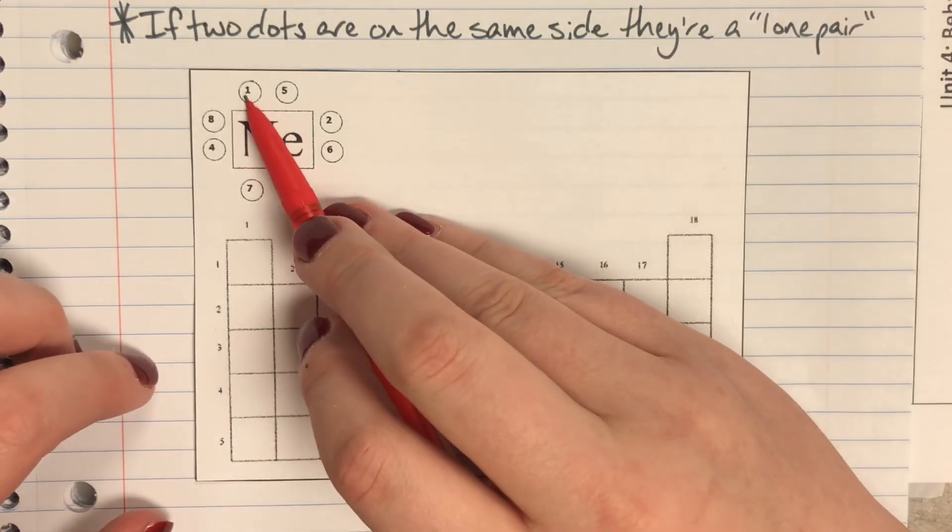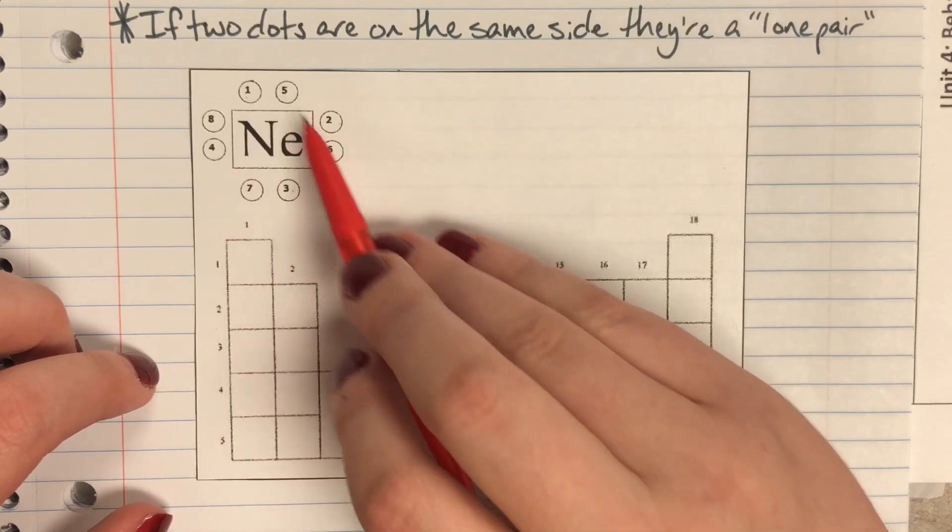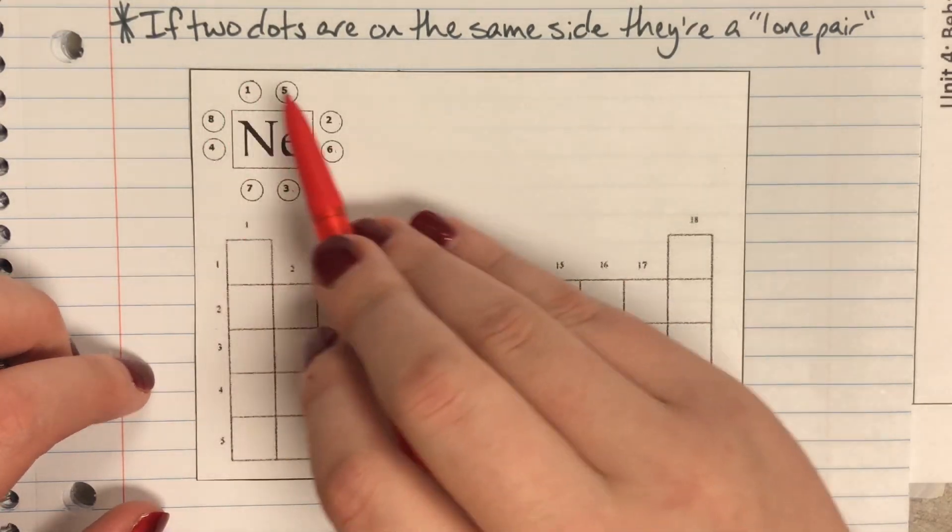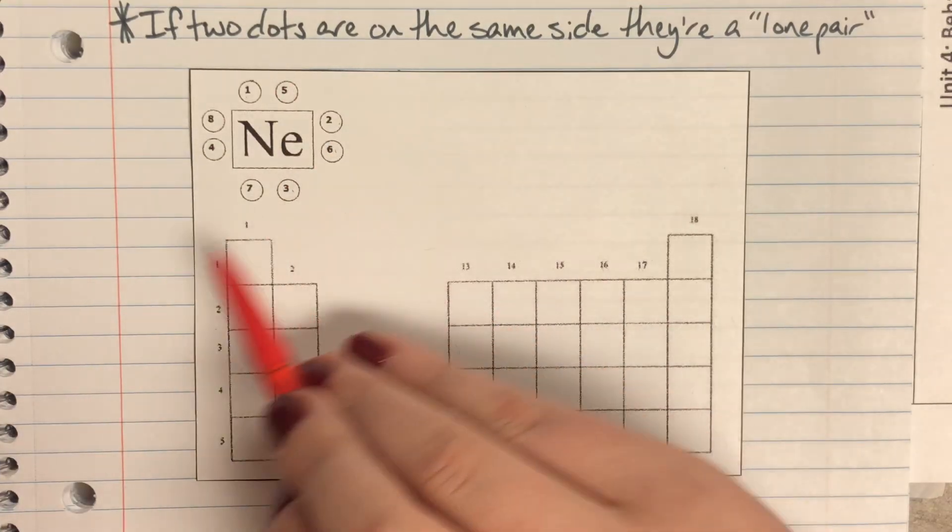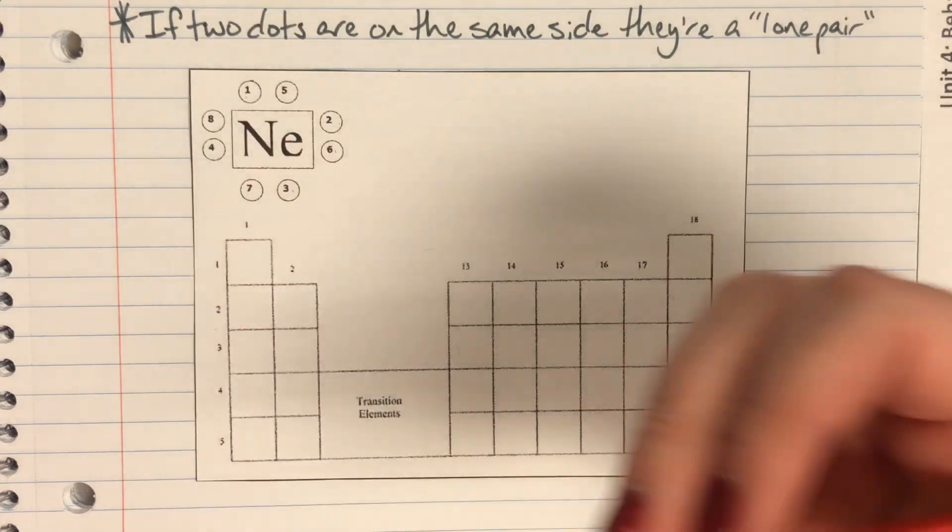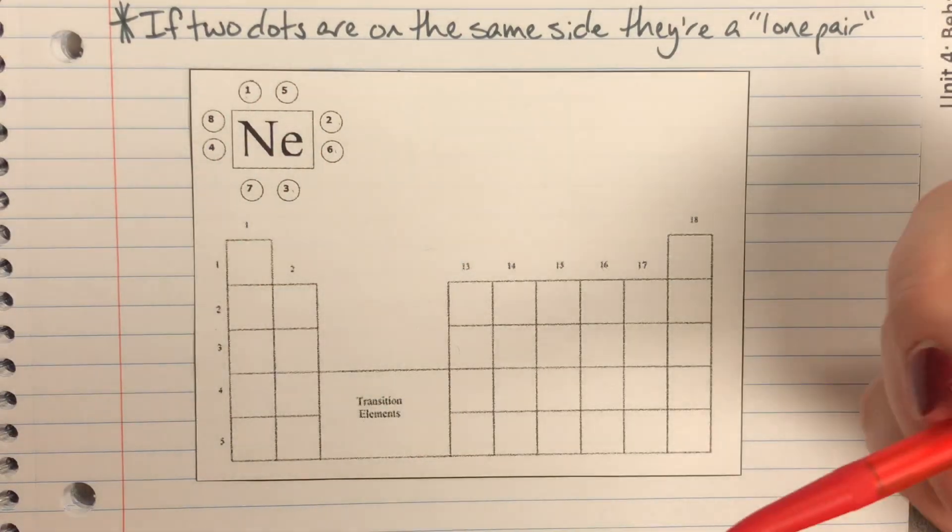So my first dot goes here, second, third, fourth, fifth, sixth, seventh, eighth. You'll notice I'm going in a clockwise direction and I am trying to leave the electrons alone for as long as possible before I force them to be in a lone pair.